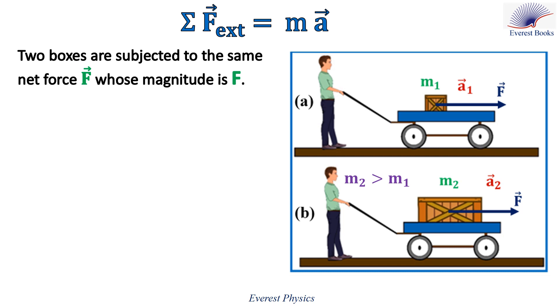Now, let's study the relation between the net force, the mass, and the acceleration of an object. Consider two boxes having different masses but subjected to the same net force F. The box in figure one has a mass m1, while the box in figure two has a mass m2, and m2 is greater than m1. These two boxes are subjected to the same net force F.